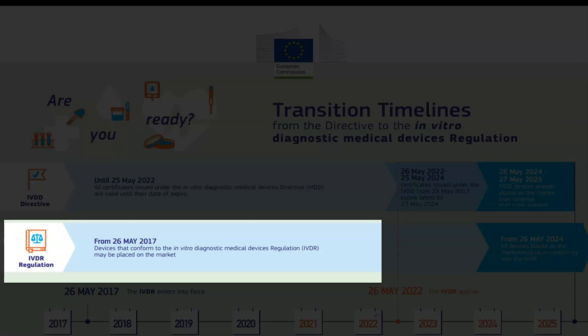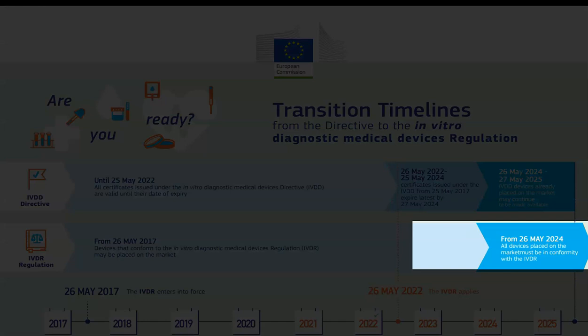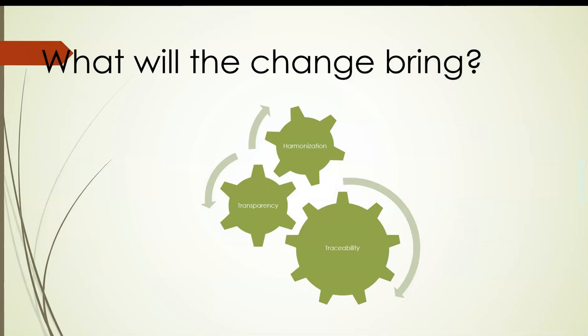As mentioned previously, this would have been challenging to do. Looking at the timeline on the bottom of the template, the In Vitro Diagnostic Regulation applies from the 26th of May 2022. Examining the bottom right-hand side, from May 2024 all devices placed on the market must be in conformity with the In Vitro Diagnostic Regulation. Looking at the top right-hand side, certificates issued under the IVDD from the 25th of May 2017 expire latest by the 27th of May 2024. From the 26th of May 2024 to the 27th of May 2025, IVDD devices already placed on the market may continue to be made available to the end-user.